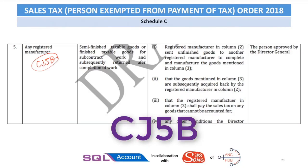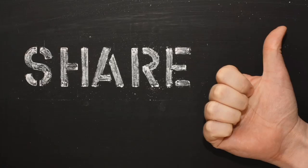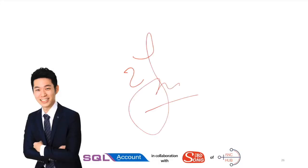Number 5, CJ5B, applies when a registered manufacturer sends goods to a subcontractor for certain value-added services. The registered manufacturer applies for CJ5B from customs and submits this form to the subcontractor. When the subcontractor delivers and sells the goods back, they cannot charge sales tax. If you found this video helpful, please share it and give us a thumbs up. This is Song, signing off.